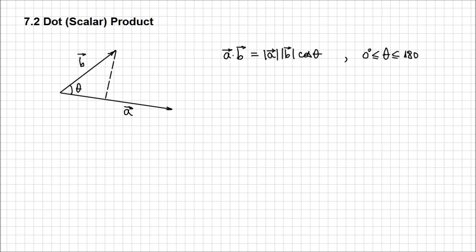If we look at these two vectors, generically named A and B, and if the displacement vector for me was A, and I project vector B on A, its magnitude is easy to calculate: it's the magnitude of B times cosine of theta. And the work is exactly the product of the magnitude of A and the magnitude of this segment — basically the projection of B on A.